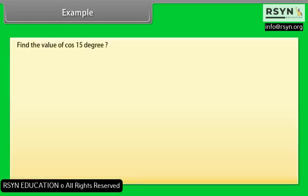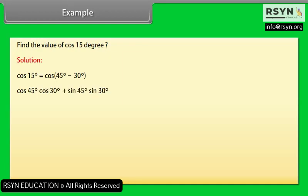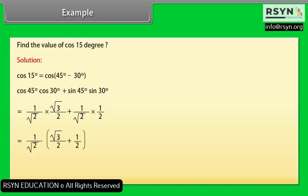Example: Find the value of cos 15°. cos 15° = cos(45° − 30°) = cos 45°·cos 30° + sin 45°·sin 30° = (1/√2)(√3/2) + (1/√2)(1/2) = (1/√2)·(√3/2 + 1/2) = (1/(2√2))(√3 + 1).